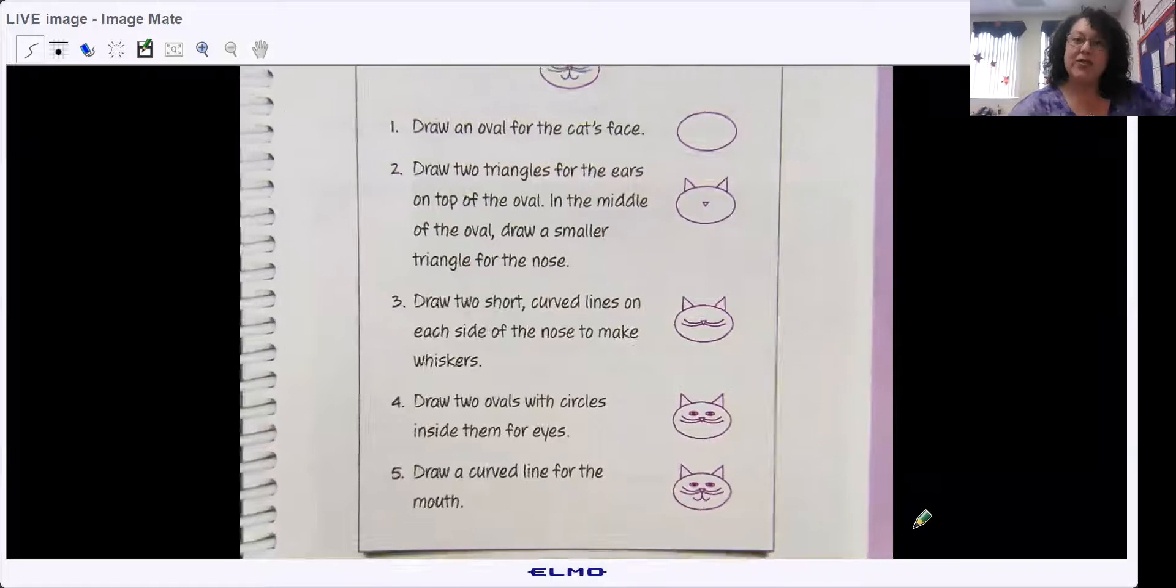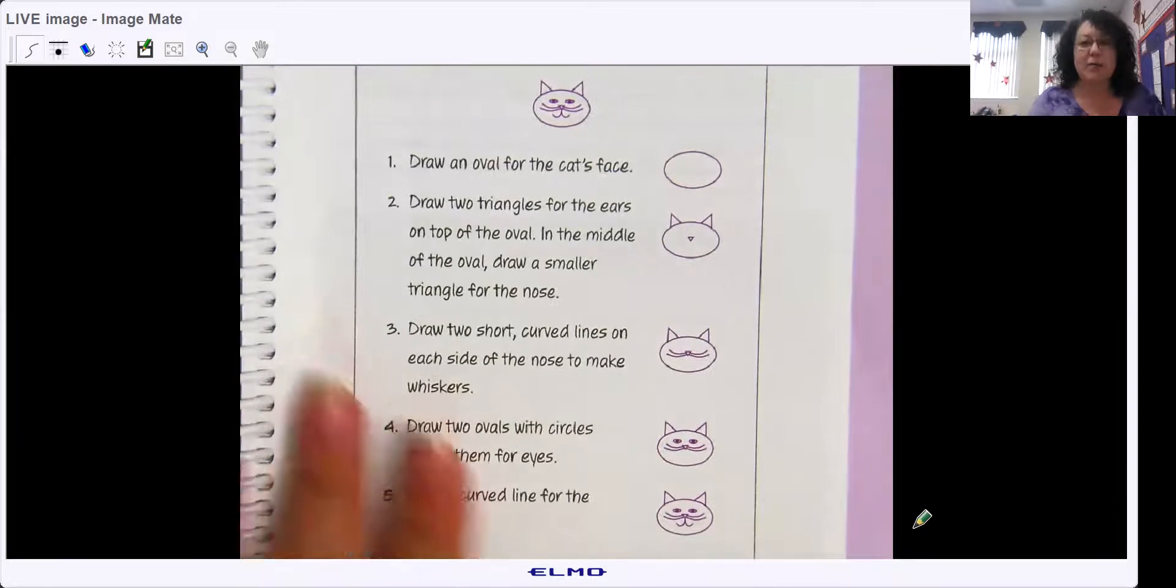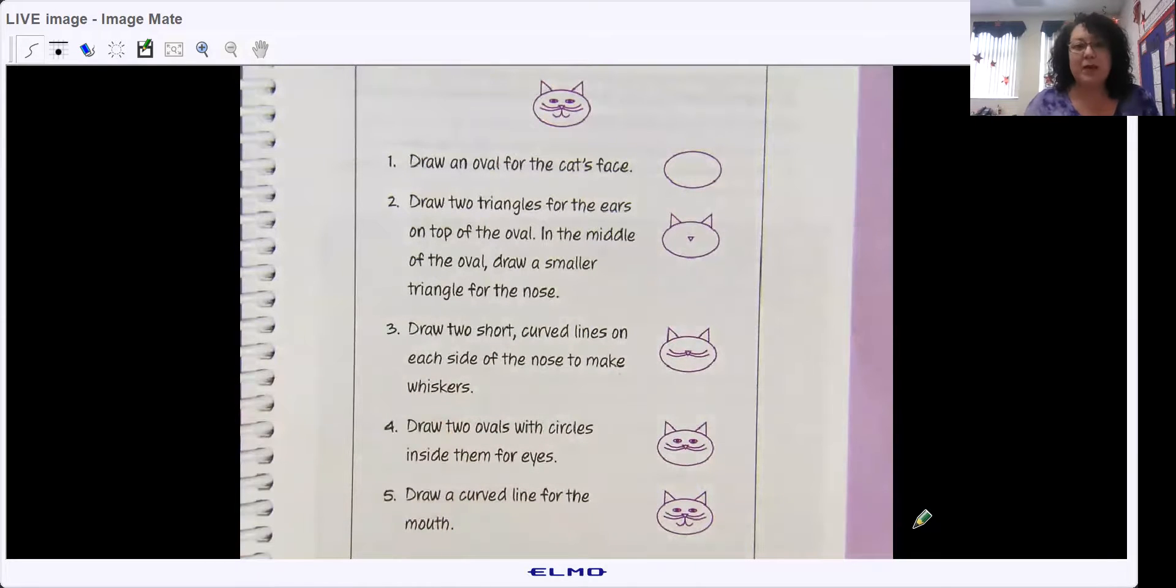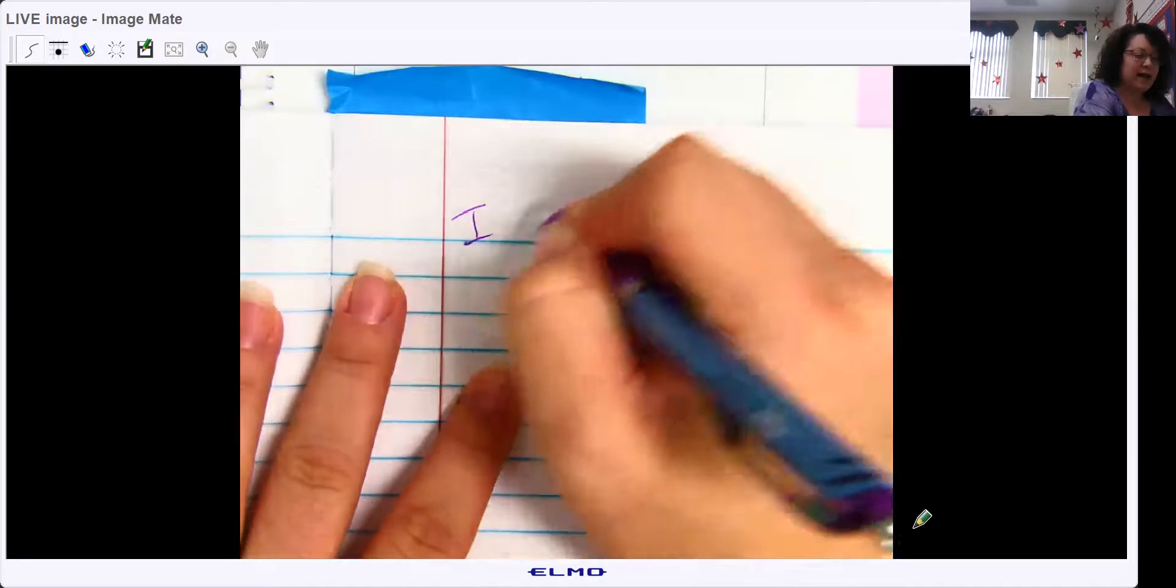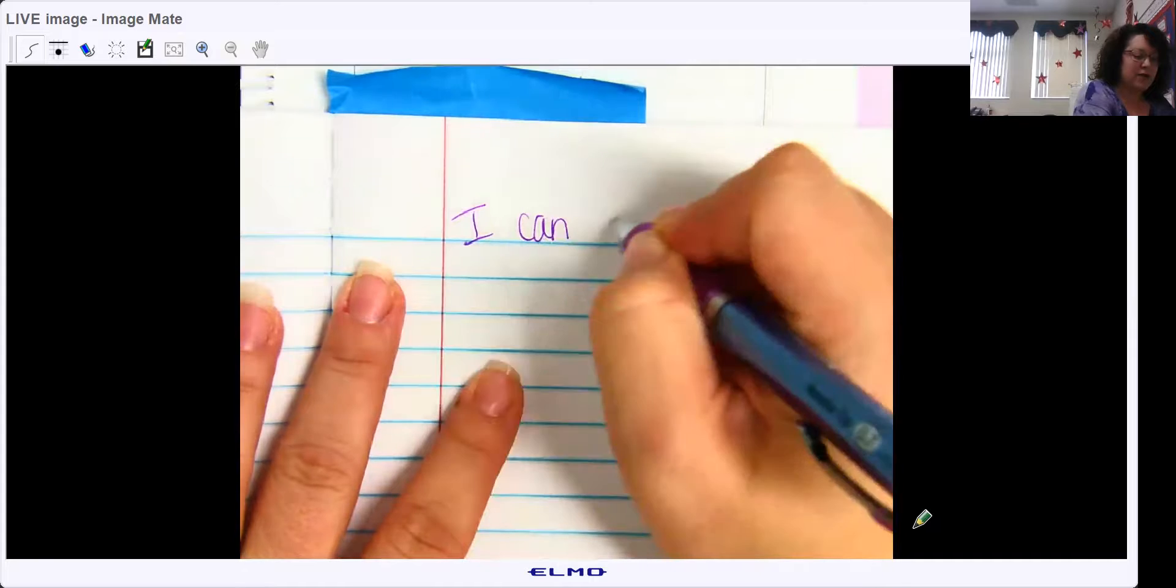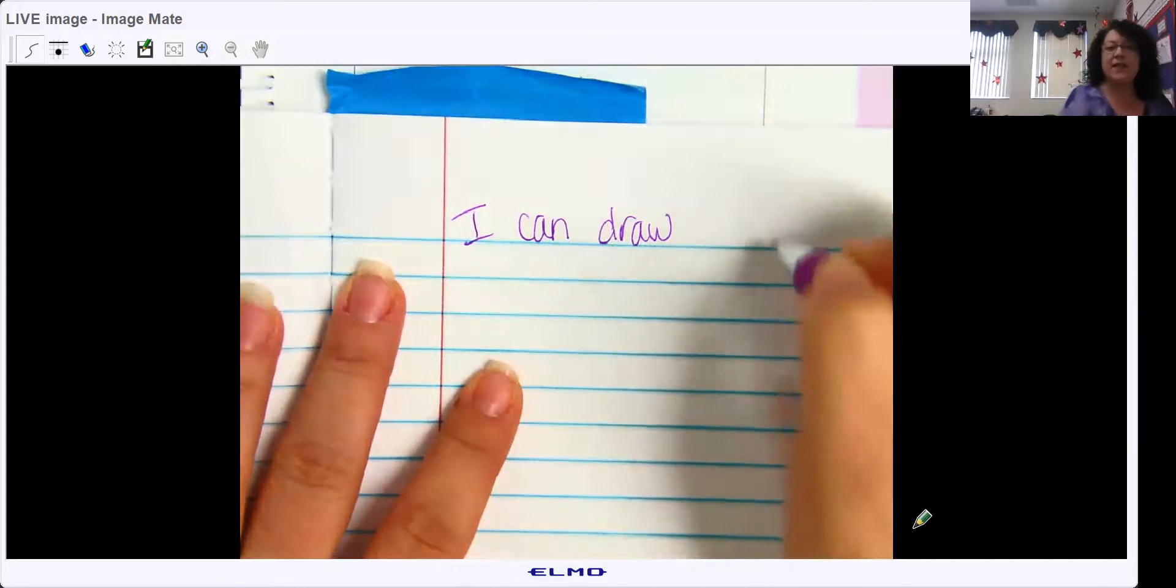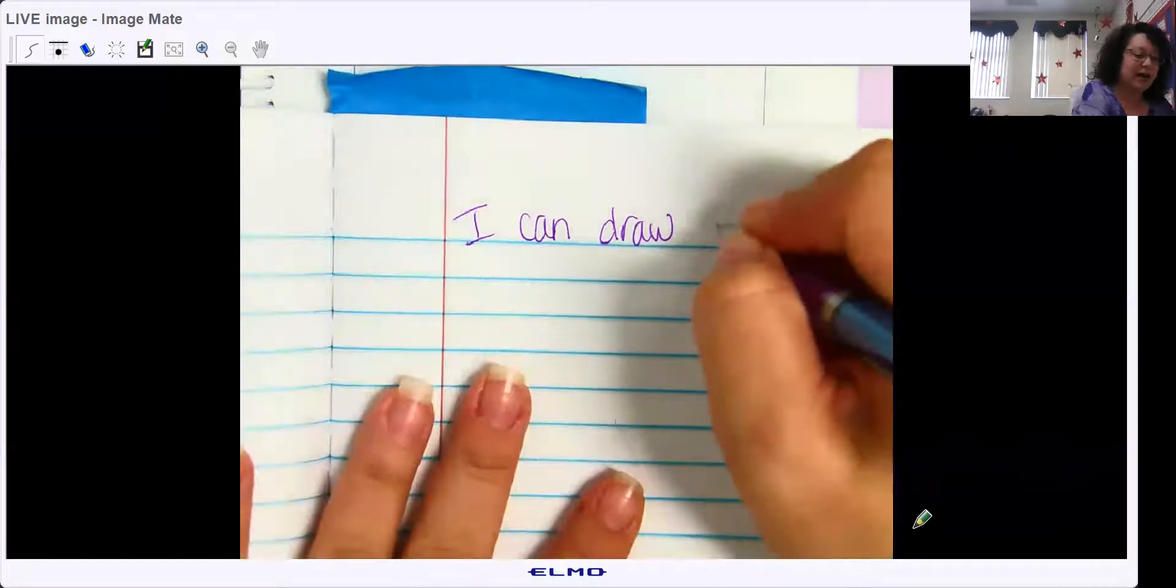Your job is to choose an animal. Like I said, it could be from yesterday, it could be from your list, or it could be a whole different animal. In your writing notebook, on the next page, I can draw, and then your, whatever your animal is. So I'll just use the example I just gave you. I can draw a cat.